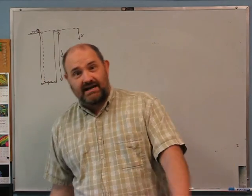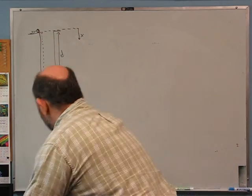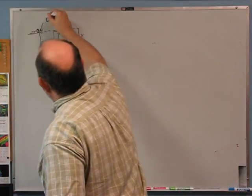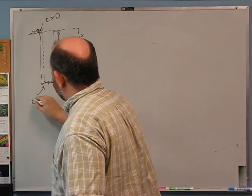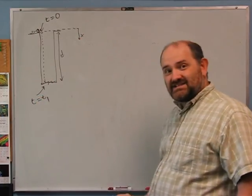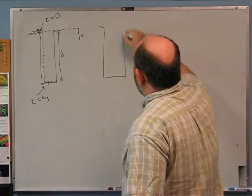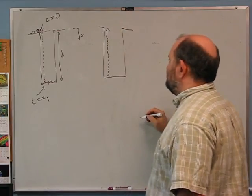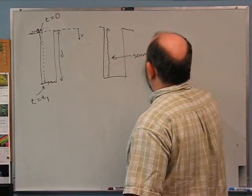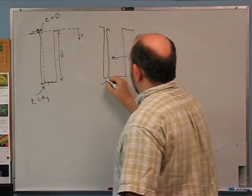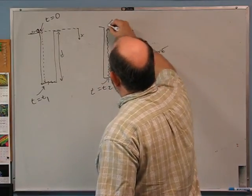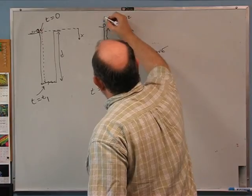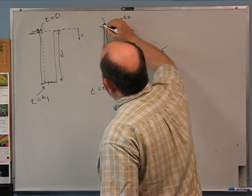Before you get to 'what equation do I use?' you want to draw out what's going on. Here's what I'll do. I'll set t = 0 when he drops the pebble. I'll define a new time t = t₁ when it hits the water. Then there's another part to the problem: the sound waves have to travel back up to Pippin. So the sound wave starts moving at t = t₁, and it'll reach Pippin at t = t₂.